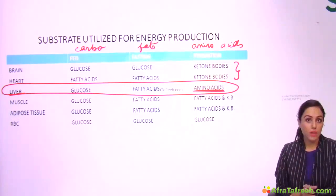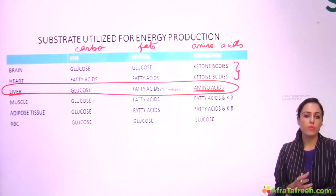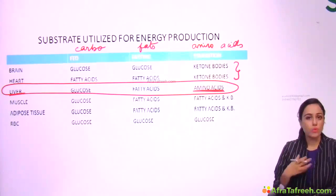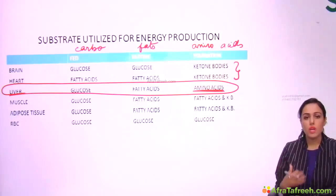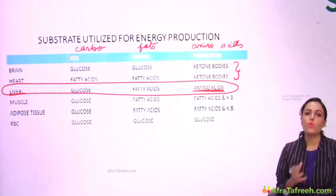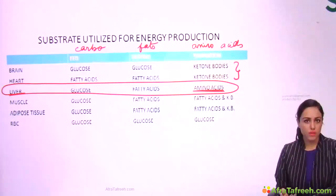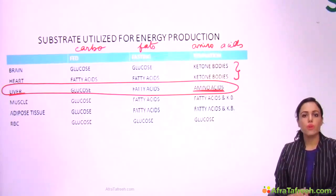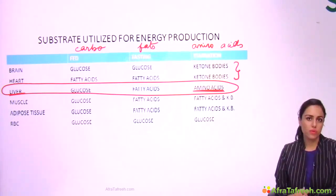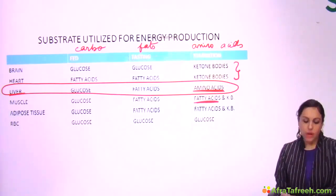Glucose is not given as the main fuel for heart and brain in starvation, because other body organs can also use glucose, and it might not remain available for the heart and brain. If the heart and brain were to die, the body would die. So ketone bodies are assigned as the fuel at this point, because ketone bodies cannot be used by just any other organ.